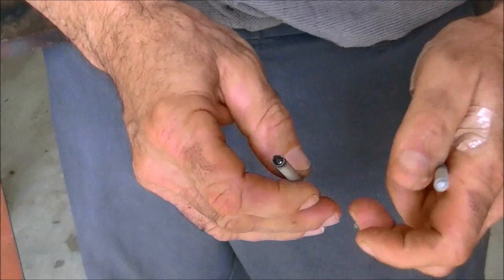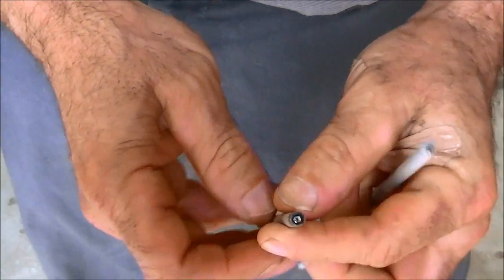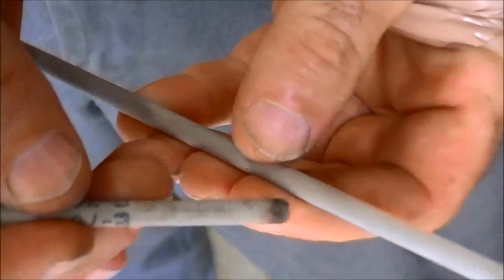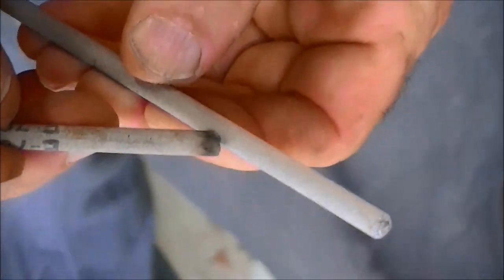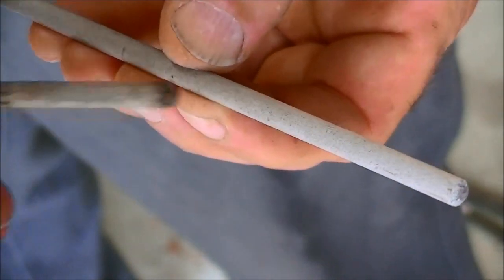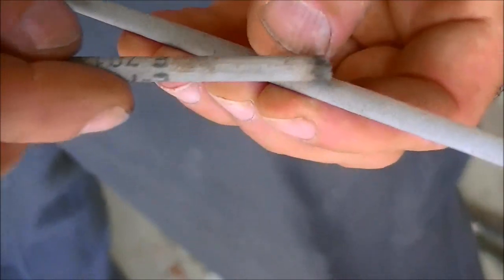When you're welding, it will maintain the arc for you. It has a little concaveness to it. You can actually touch the metal and it will maintain that arc distance for you and you can actually just kind of drag it along as the rod eats away.